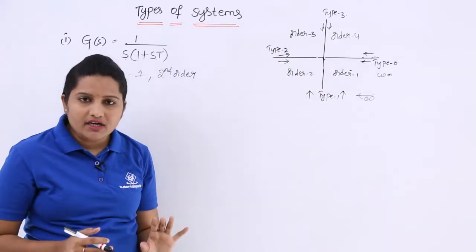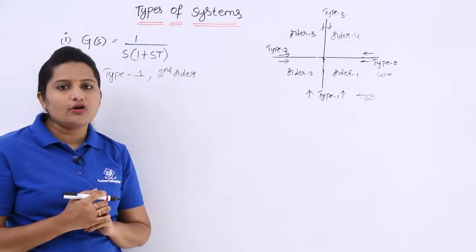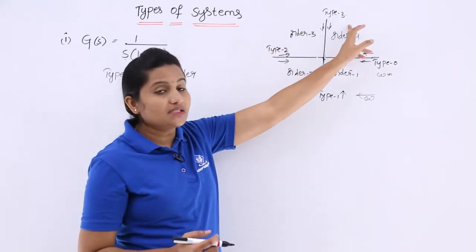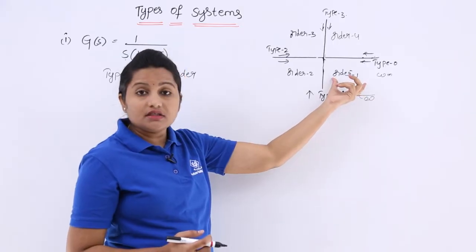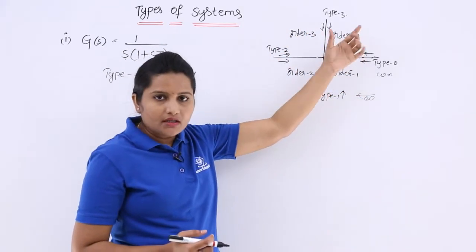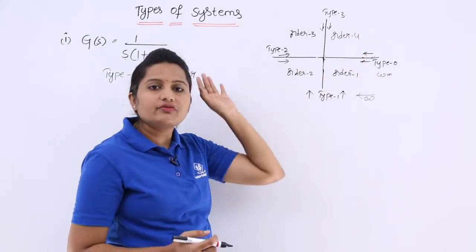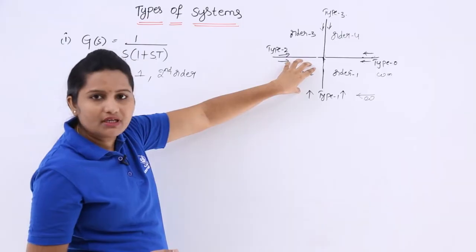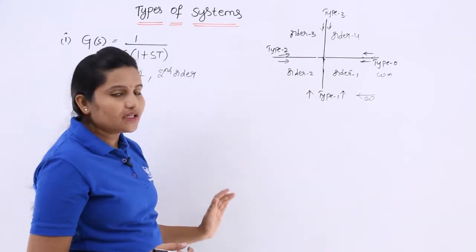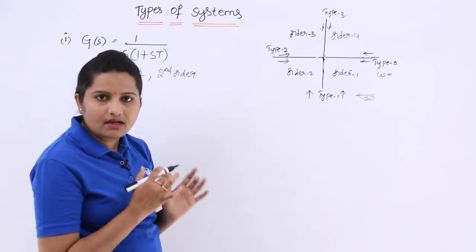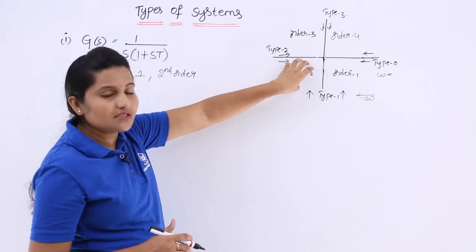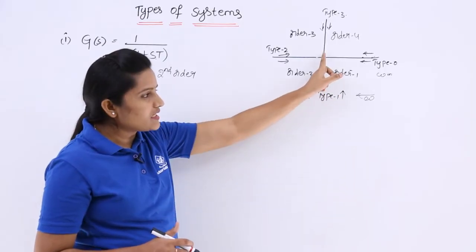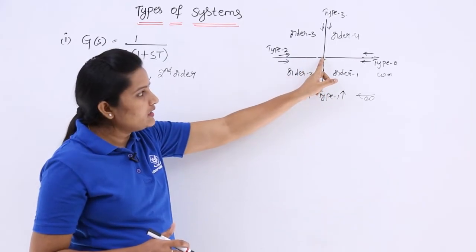Now, using this, we can determine where we are going to plot the polar plot or Nyquist plot. If you see this reference diagram, there are different types — type 0, type 1, type 2, type 3 — and different orders — order 1, order 2, order 3, order 4. According to this, you can identify where the plot will be. For type 1 and second order, your plot will be in this particular coordinate — starting on this line and ending at this coordinate.